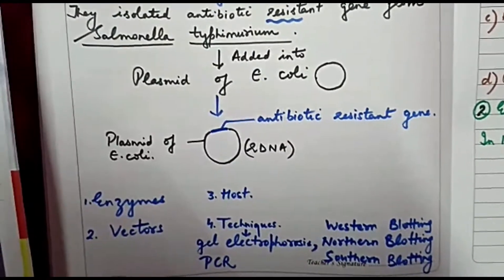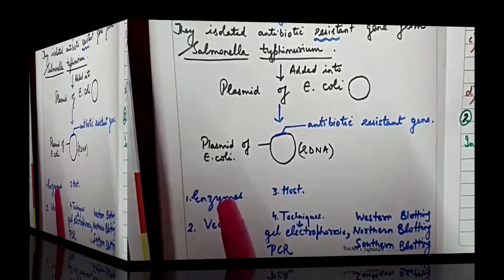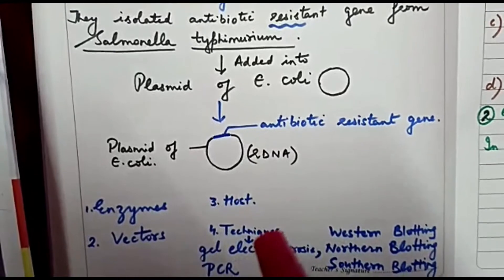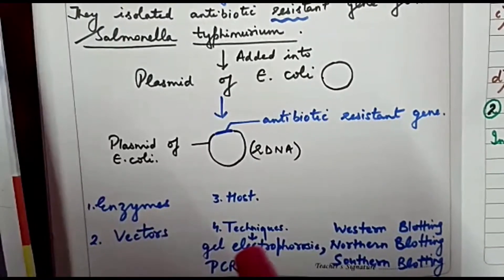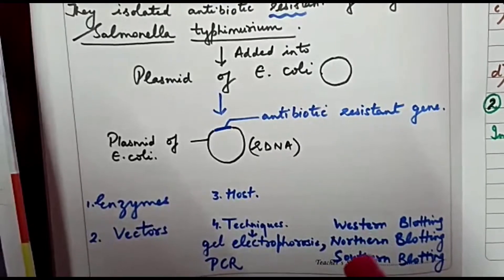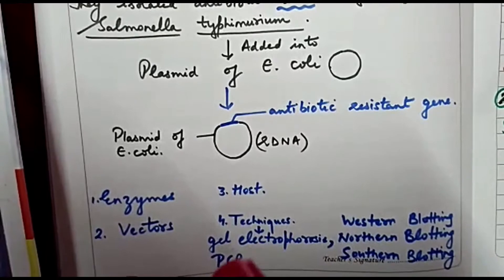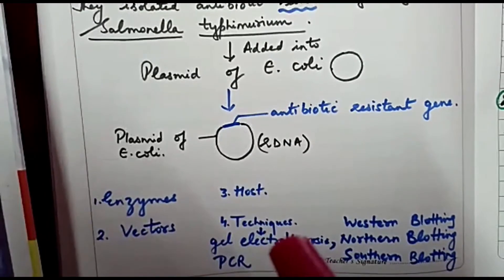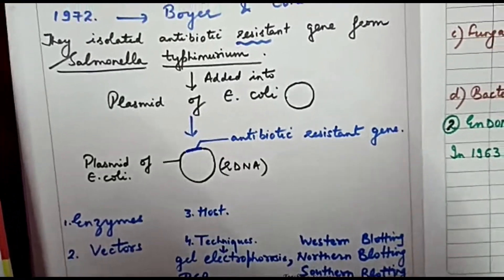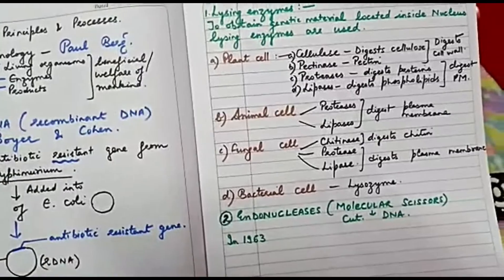In this chapter, we will basically discuss enzymes used in biotechnology, vectors, hosts, and certain techniques of biotechnology like gel electrophoresis, PCR, Western blotting, Northern blotting, Southern blotting, etc. We will discuss some parts in detail, like PCR and gel electrophoresis. First, let's look at which enzymes are used in biotechnology.